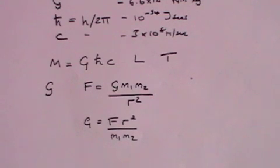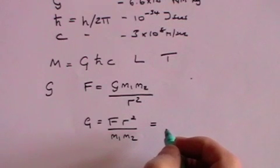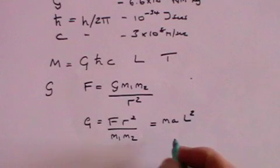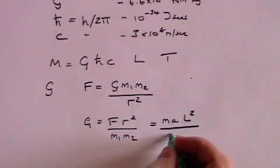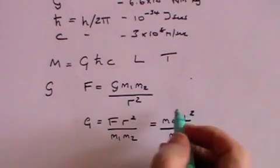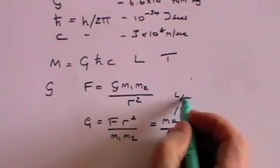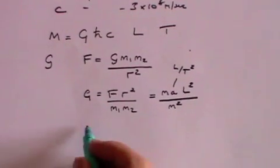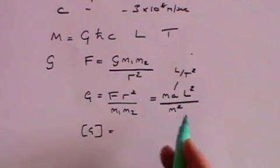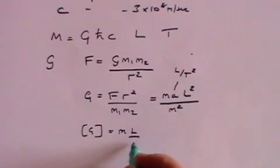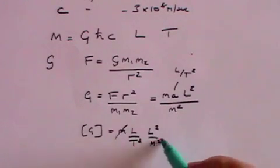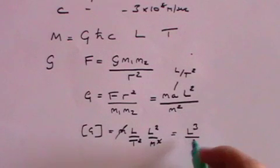Now the question is, what are the dimensions of G? Well, the dimensions of G are simply going to be given by the dimensions of each of these quantities. Force is mass times acceleration. R-squared is simply a length-squared term. And the masses are two mass terms, m-squared. Acceleration, of course, is simply length divided by time-squared. It's meters per second per second. And so you can write that the dimensions of G, which we often do by putting G in square brackets, are mass times l over t-squared times l-squared divided by m-squared.